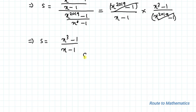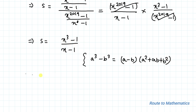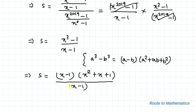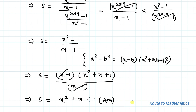Now we have x³ - 1 in our numerator, so we apply the algebraic identity a³ - b³ = (a - b)(a² + ab + b²), where a = x and b = 1. Applying this identity: S = (x - 1)(x² + x + 1) / (x - 1). The (x - 1) terms cancel, giving us S = x² + x + 1. Thus our simplified form of the given series is x² + x + 1.